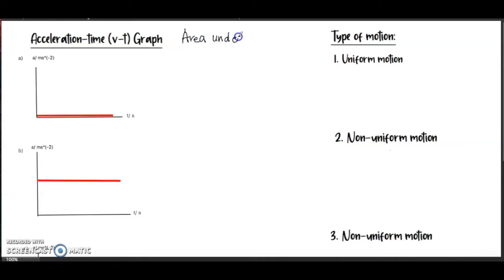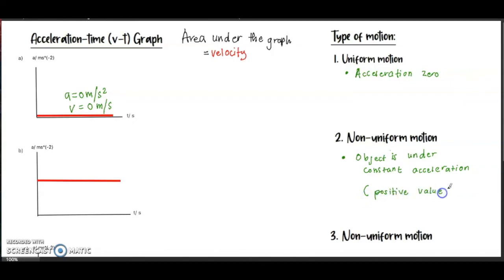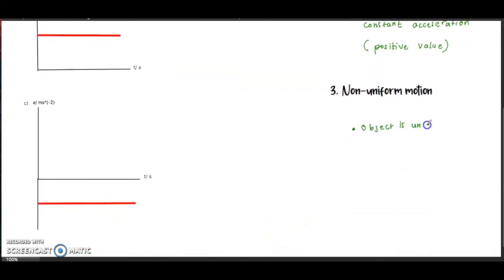Next we move to the last graph, that is the acceleration-time graph. The area under this graph refers to velocity. The first graph shows no area, so there is no velocity and acceleration equals zero. For the second graph, we have a constant positive value of acceleration, meaning the object is under constant acceleration. The last graph shows a negative value of acceleration, meaning the object is under deceleration at a negative value. That's all, thank you.